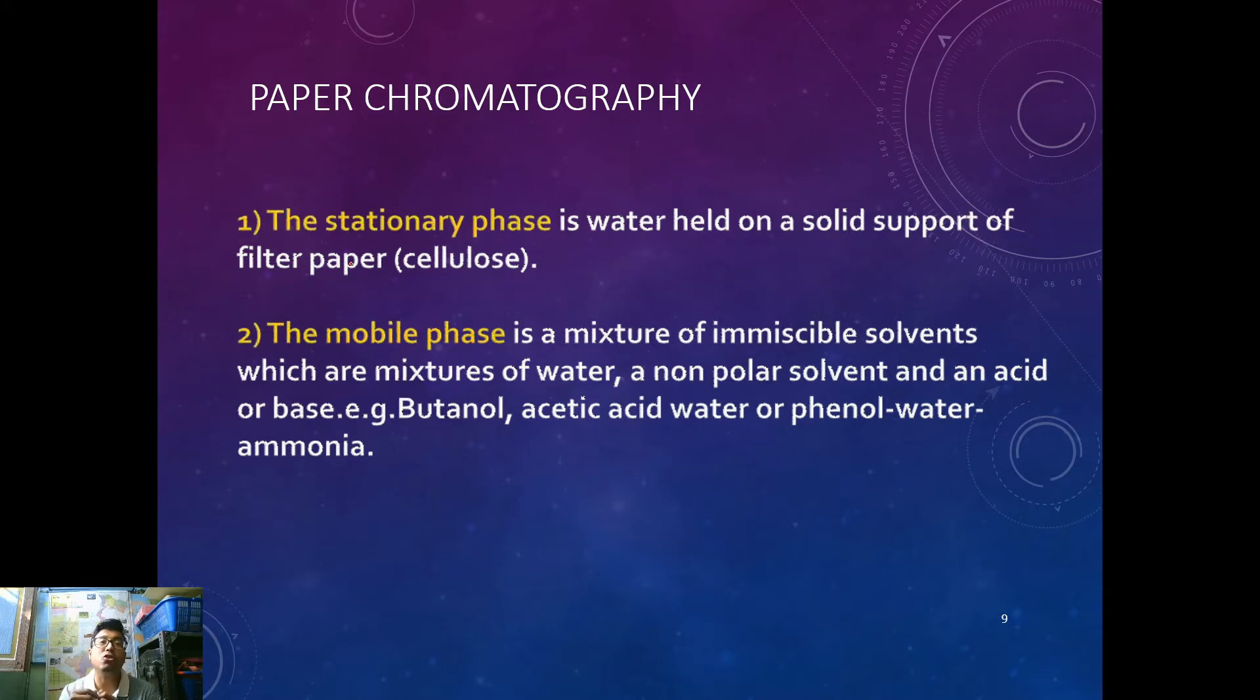The mobile phase is generally mixture of immiscible solvents, some solvent that is not fully miscible with water. Those are mainly non-polar solvents: number one, butanol, often called one butanol or n-butanol or butyl alcohol. And the other immiscible liquids are acetic acid, aqueous solution of acetic acid and phenol water ammonia. For practical purposes for medical students, the thing that is used is one butanol. So remember, stationary phase is cellulose and mobile phase is mixture of water and another immiscible solvent that is one butanol.